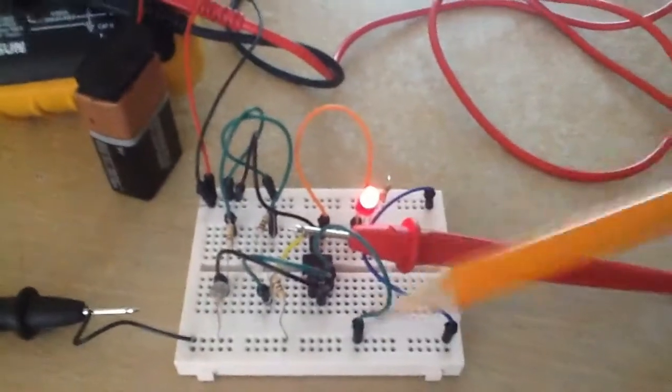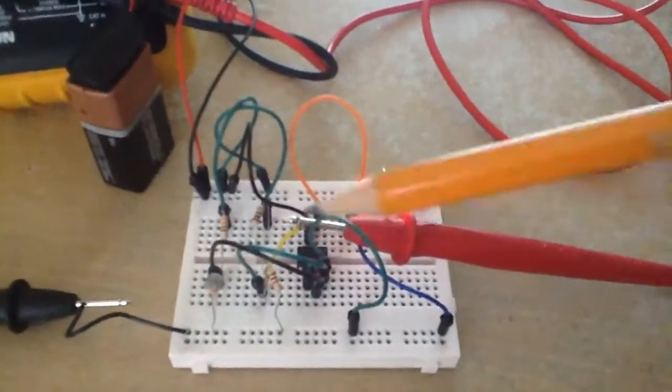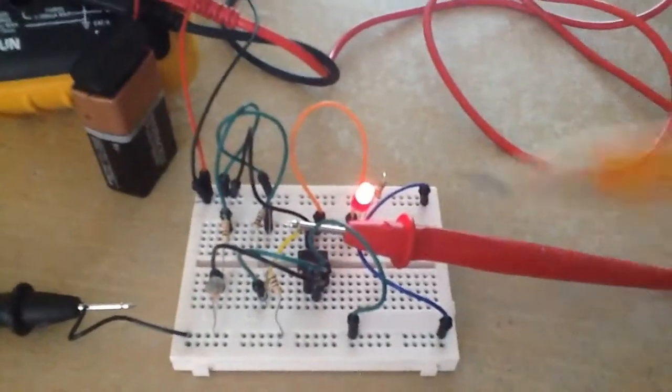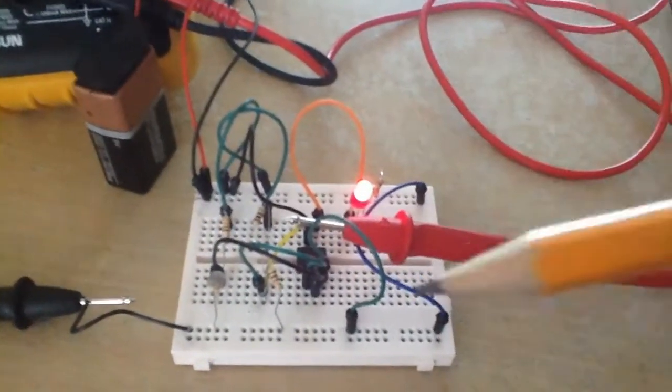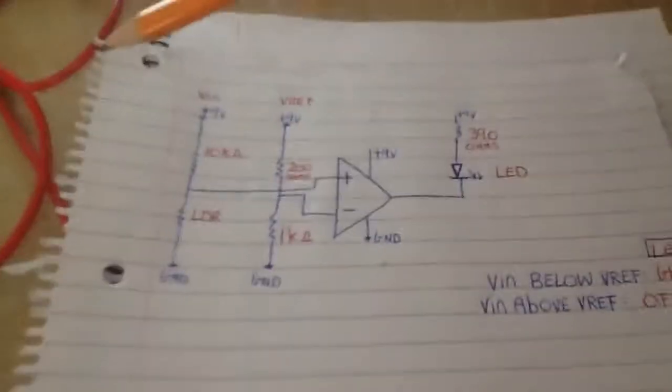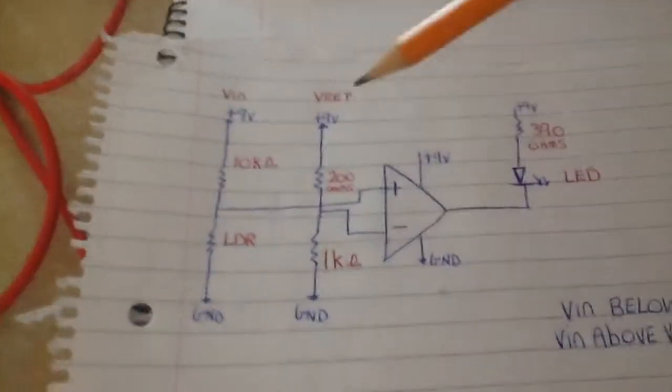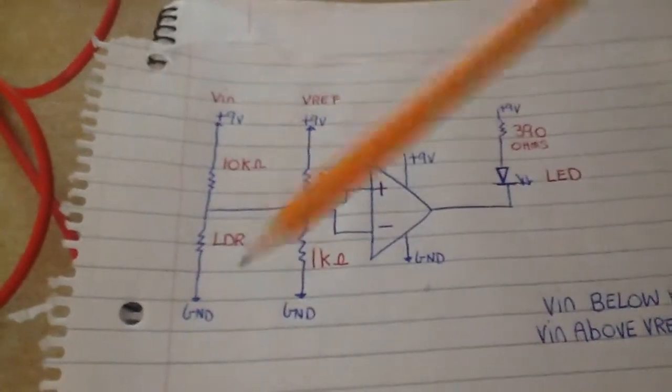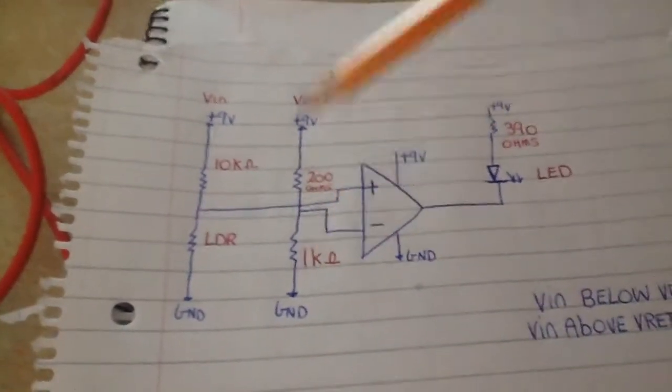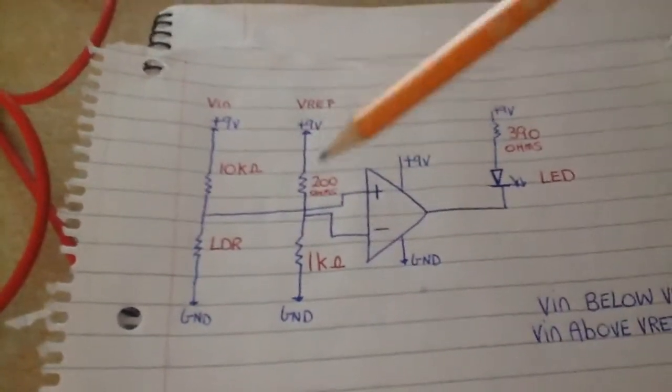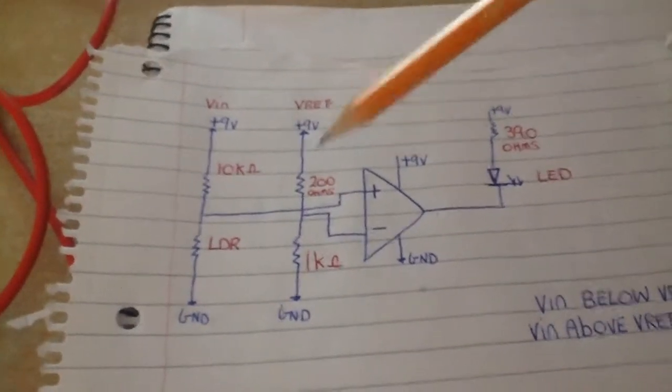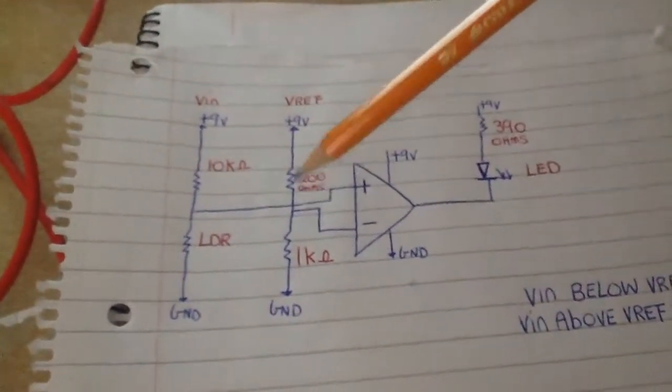In this video we're going to be looking at how you can use the LM7401 op-amp as a comparator to compare two voltages. This is the schematic that we're using and so we have some voltage divider circuit setups here. The output of this is going to be our reference voltage. We're taking the voltage across these two resistors and feeding that into the inverting pin of the op-amp.